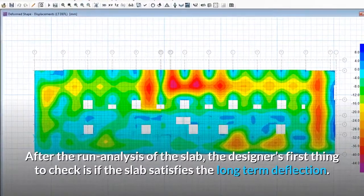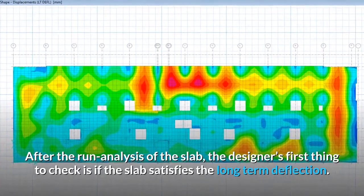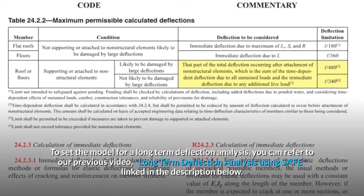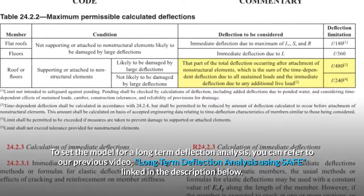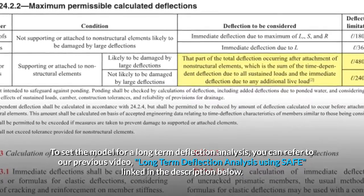After the run analysis of the slab, the designer's first thing to check is if the slab satisfies the long-term deflection. The long-term deflection should not be less than L-240 according to ACI code and ideally not more than 24mm. To set the model for a long-term deflection analysis, you can refer to our previous video, Long-term deflection analysis using SAFE, linked in the description below.